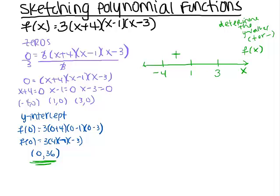Let's figure out the interval from negative infinity to negative 4. Let's pick a number less than negative 4 — how about negative 5. We substitute that into our function. 3 is positive, negative 5 plus 4 gives a negative, negative 5 minus 1 gives a negative, and negative 5 minus 3 gives a negative. I don't care what the number is, I just want to know if it's positive or negative. So I have a positive times 3 negatives, which gives me a negative number.